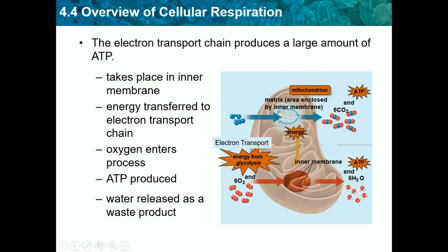The 2 molecules from glycolysis enter the Krebs cycle, where we release CO2 and get energy. That energy is transported to the electron transport chain, where oxygen joins the cycle. The oxygen and the energy together produce a large amount of ATP, and water is released as a waste product.